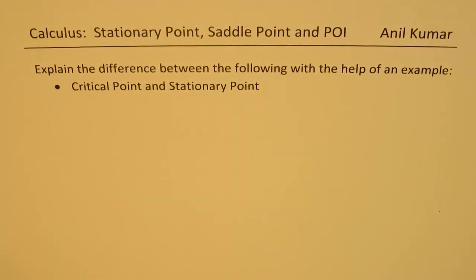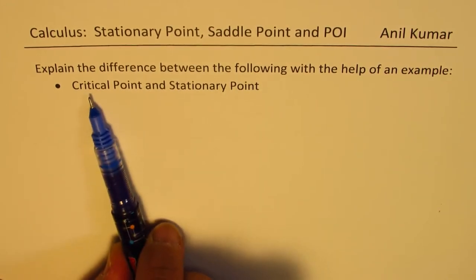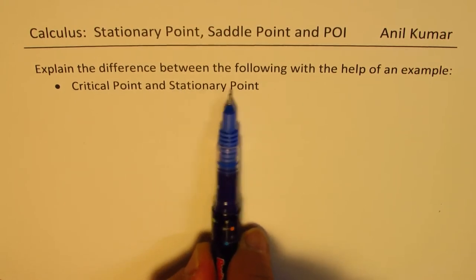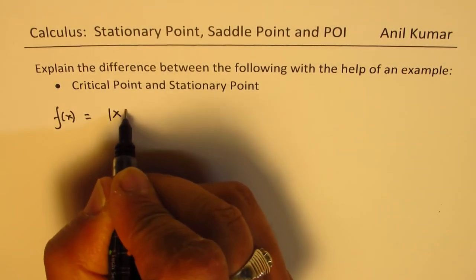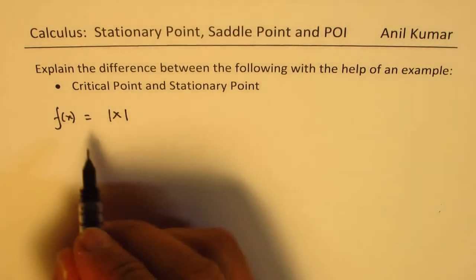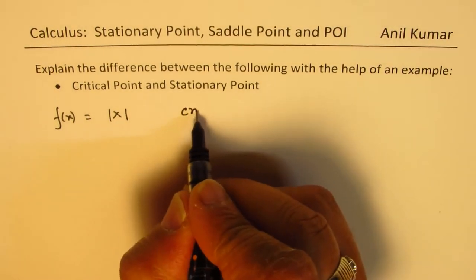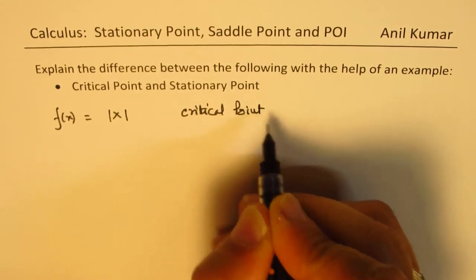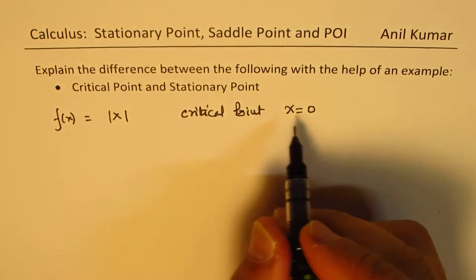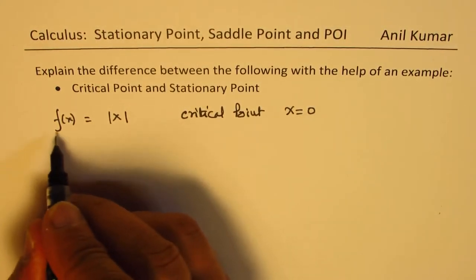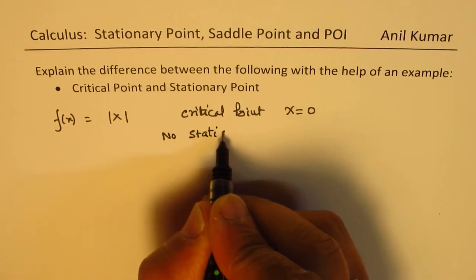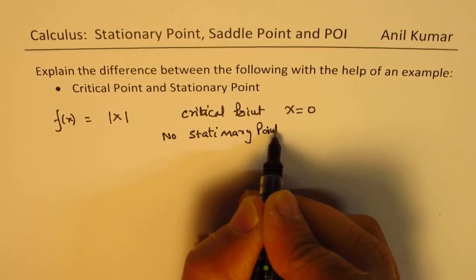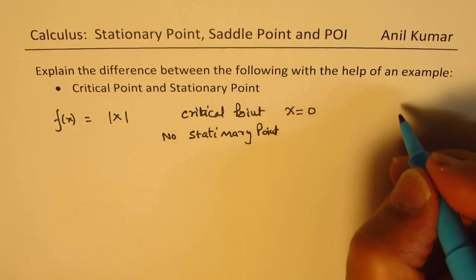I hope you have understood the basic concept. The idea is to give you examples where we can say this is a critical point but not a stationary point. For that, we already have examples. If I have f of x as the absolute value of x, in that case we have a critical point at x equals zero. However, for this particular graph, there is no stationary point.